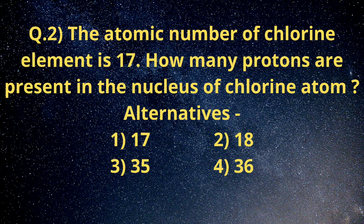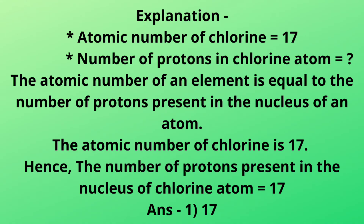Question number two: how many protons are present in the nucleus of the chlorine atom? The alternatives are: number 1 - seventeen, number 2 - eighteen, number 3 - thirty-five, number 4 - thirty-six. In this problem, the atomic number of chlorine is equal to 17. We have to find out the number of protons present in the atom of chlorine. The atomic number of an element is equal to the number of protons present in the nucleus. The atomic number of chlorine is 17.